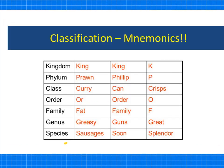A really good way to learn this hierarchical structure is through using mnemonics. A mnemonic is where you take the first letter of each word and use different words to remember it. For example, my favourite is 'King Prawn Curry Or Fat Greasy Sausage.' But you can come up with your own ideas to remember the order of the different groups.